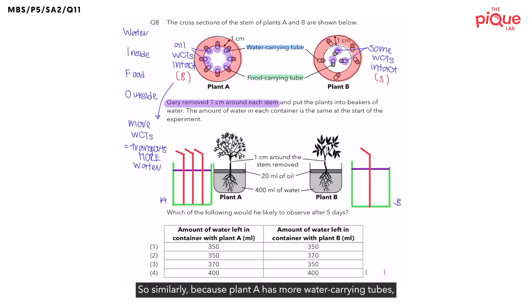So, when Mr. Joshua drinks from both of these cups with an equal amount of liquid, which cup would have less grape fanta remaining? It will be cup A. That's because cup A has more straws, meaning that it will be able to transport more grape fanta from the cup to my mouth. So, similarly, because plant A has more water-carrying tubes, it will be able to transport more water, leaving the amount of water left in the container with plant A to be less than the container with plant B.